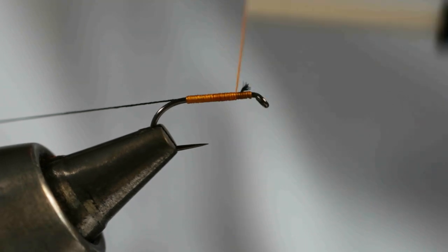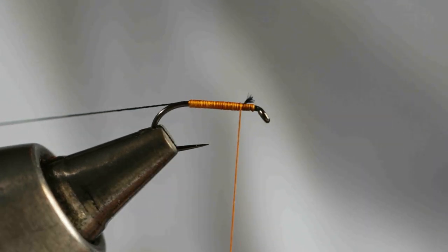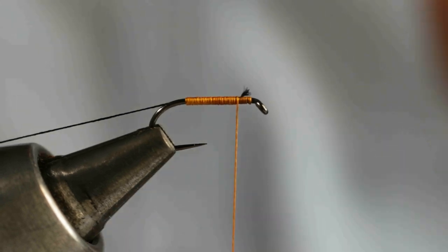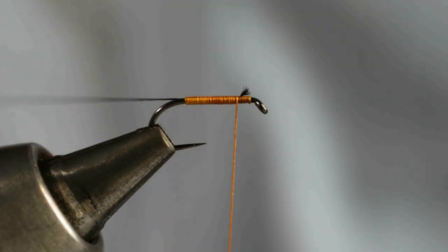And you want to finish your body silk about six turns of thread back from the eye of the hook. This will give you enough room to put in the hackle as well as a nice head for the fly.